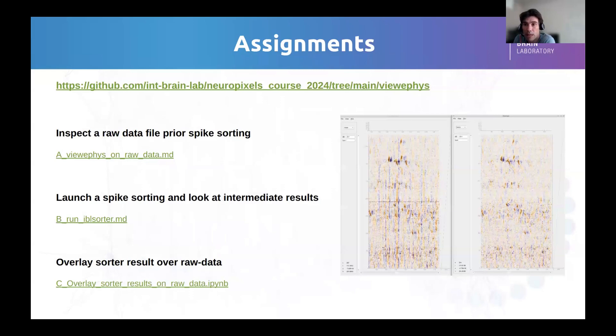The second part is to launch a spike sorting and to look at those intermediate QCs. I don't expect everyone to run the spike sorting because it's a lot of data, it's a big job. As Alessio said, it's a big task to install a spike sorter, so I've provided already the output if you want to have a look at the intermediate results of the spike sorter.